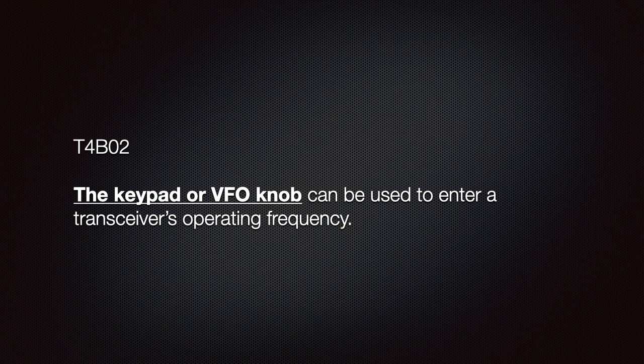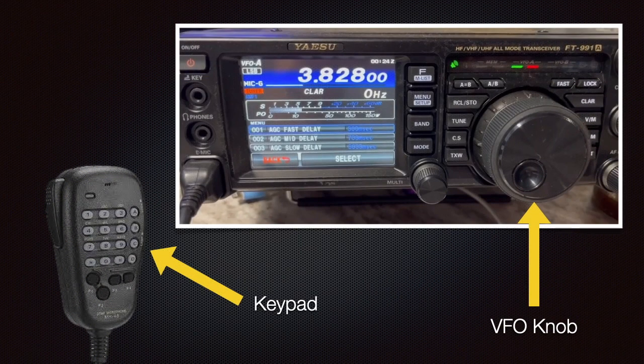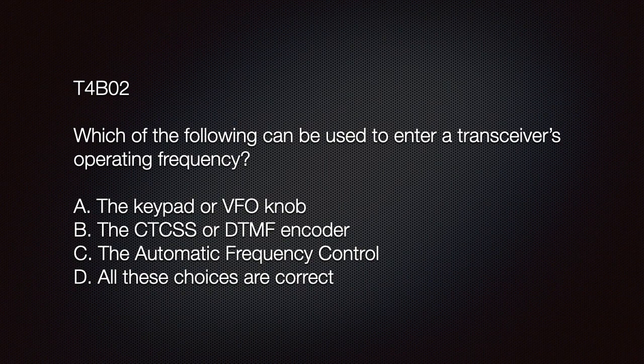The keypad or VFO knob can be used to enter a transceiver's operating frequency. As a general rule, we find keypads on microphones with mobile rigs and on the device itself for handhelds. On mobile and base stations there is usually a VFO knob as well — they're almost always the largest knob on the unit. The exam question asks which of the following can be used to enter a transceiver's operating frequency, and the answer is A — the keypad or VFO knob.